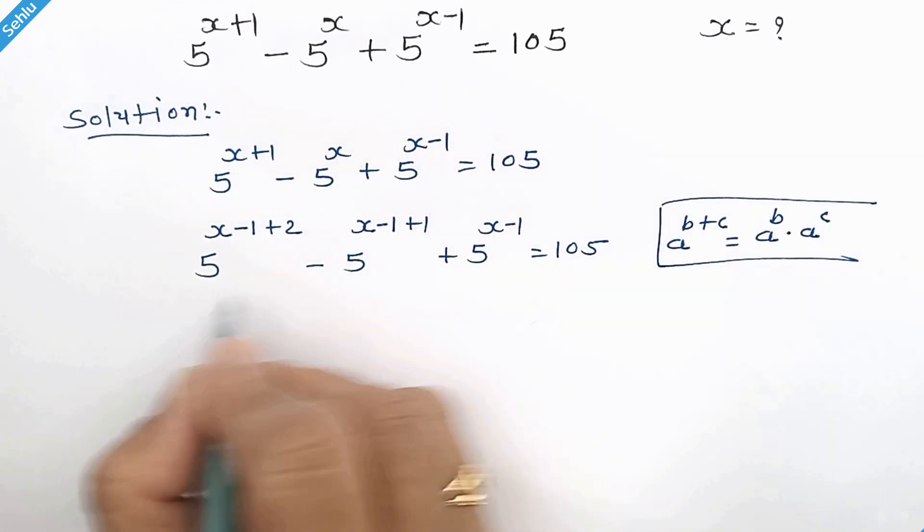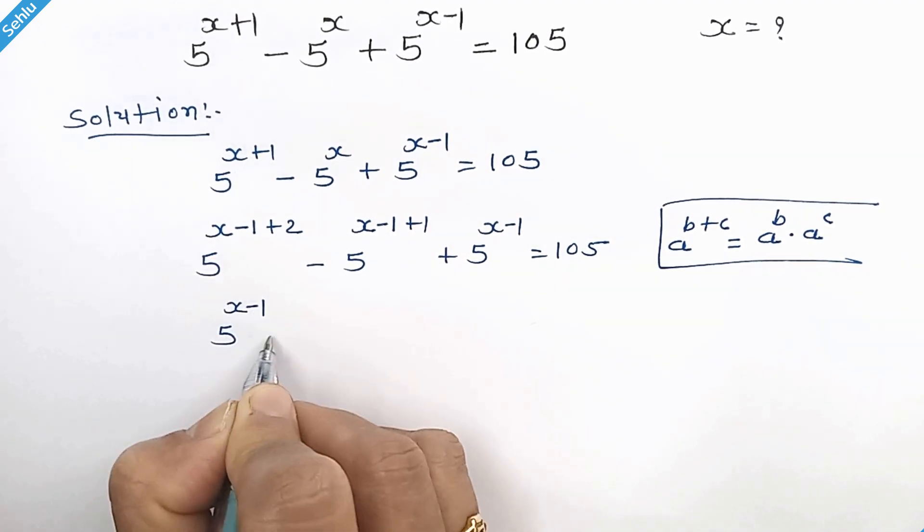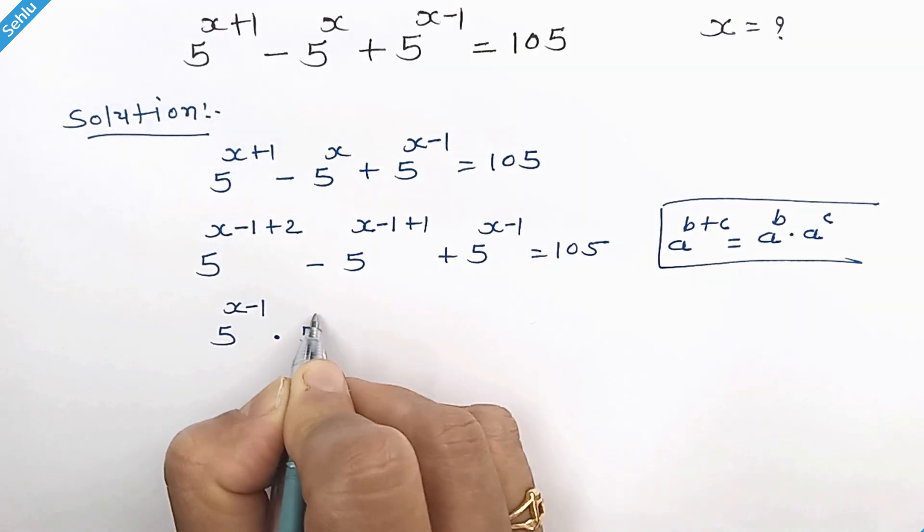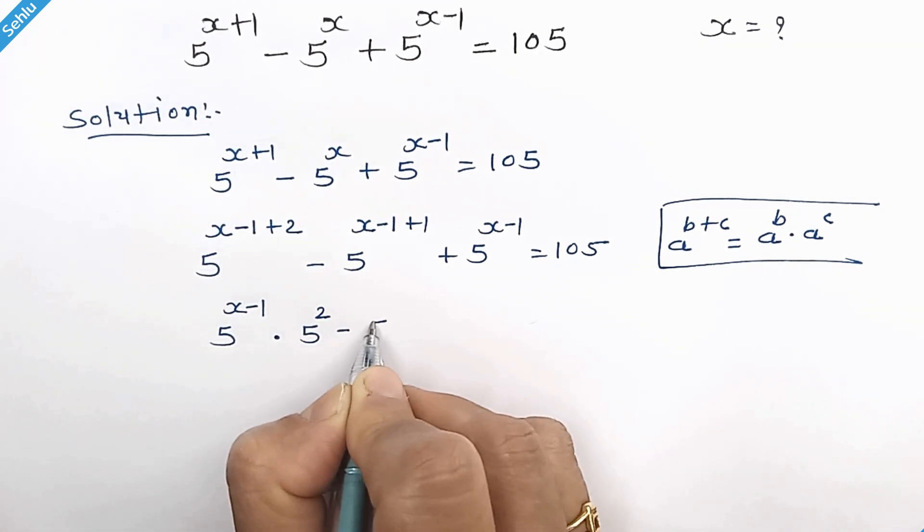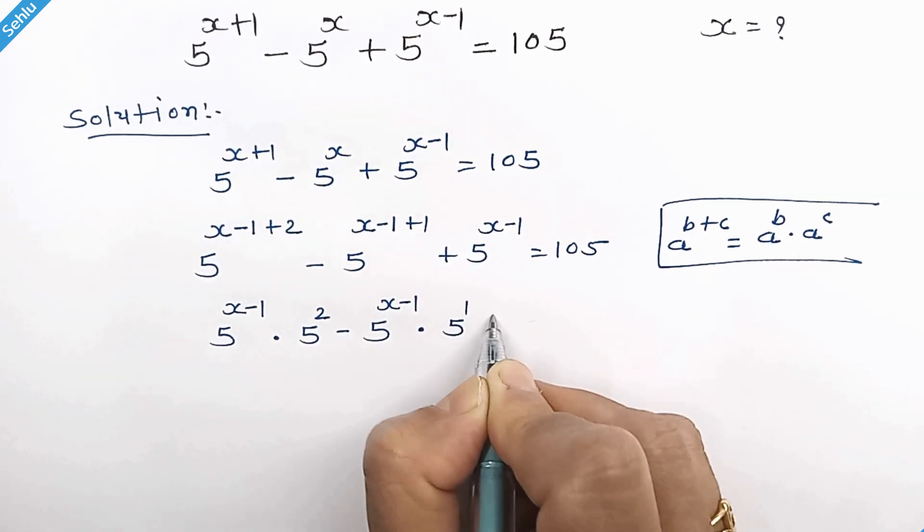In this manner we can write 5 to the power x minus 1 times 5 squared, minus 5 to the power x minus 1 times 5 to the power 1.